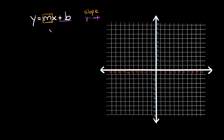Now for two lines to be perpendicular, the y-intercepts don't actually matter. The only thing that really matters is that the slopes have to be reciprocals and they have to have opposite signs. So if one is positive the other one has to be negative — if they're both positive or both negative, it's not going to work.